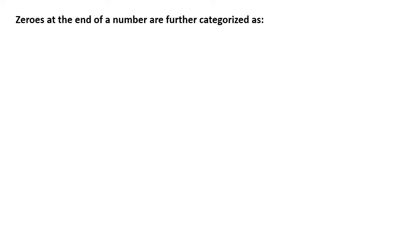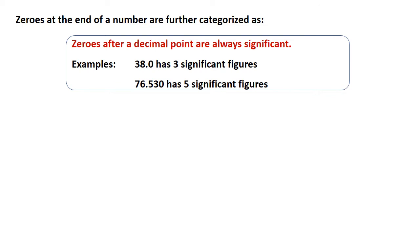Fourth rule is: zeros at the end of a number are further categorized. Zeros after a decimal point are always significant. So 38.0 has three significant figures and 76.530 has five significant figures. The zeros after a decimal point are always significant.